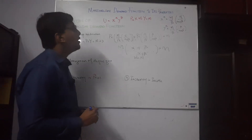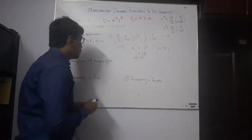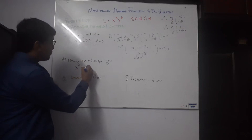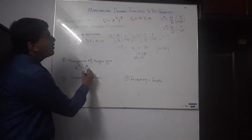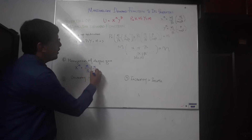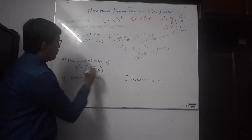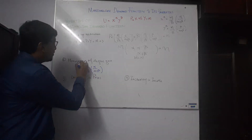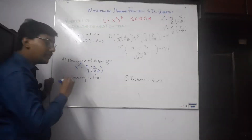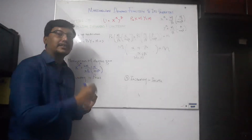We check whether the Marshallian demand function is homogeneous of degree zero. We have Xm equals M over Px times alpha over alpha plus beta. Now if we create Xm star by increasing income and prices by lambda, lambda is the increasing factor.